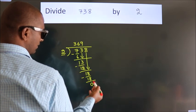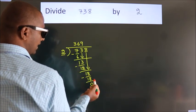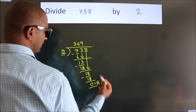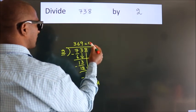After this, no more numbers to bring down. So we stop here. This is our remainder. This is our quotient.